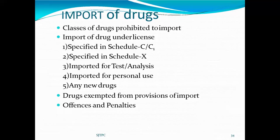Next is import of drugs under license. Drugs which come under Schedule C and C1 — which consist of biological products, blood products, vaccines, sera, immunoglobulins, proteins, and peptides — are imported under license. Drugs specified in Schedule X, that is narcotic and psychotropic substances, are also imported under license authority. Drugs imported for testing and analysis, drugs for personal use, and new drugs are also imported under license.